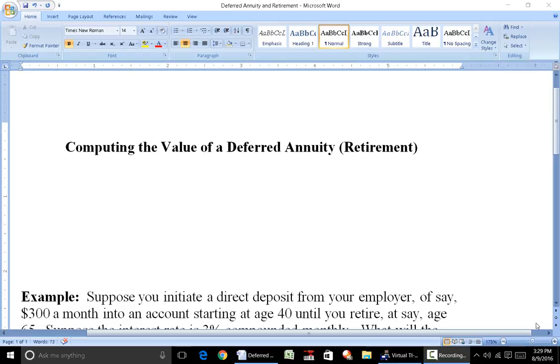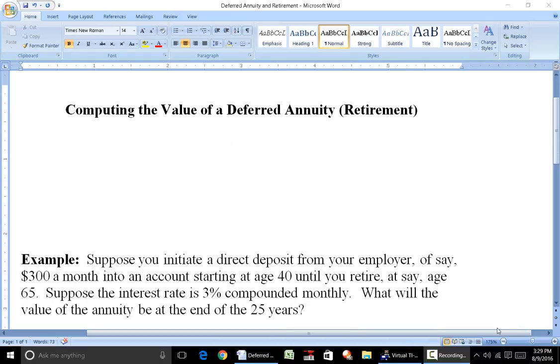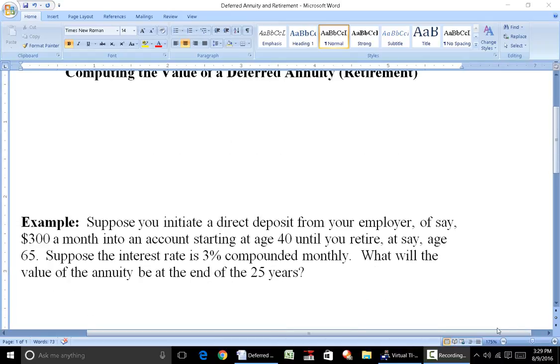So you've got your main plan, this would be a deferred annuity. So basically what you would do is you would initiate a direct deposit from your employer automatically to a savings account. Like I said, it could be to a USAA company, could be to ING, Prudential, whatever.